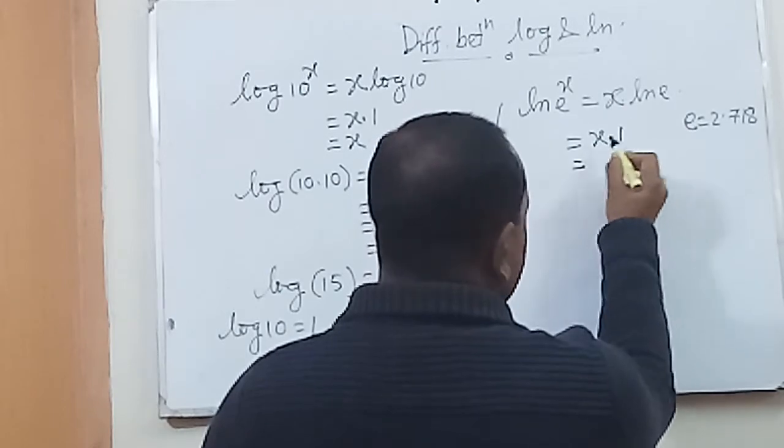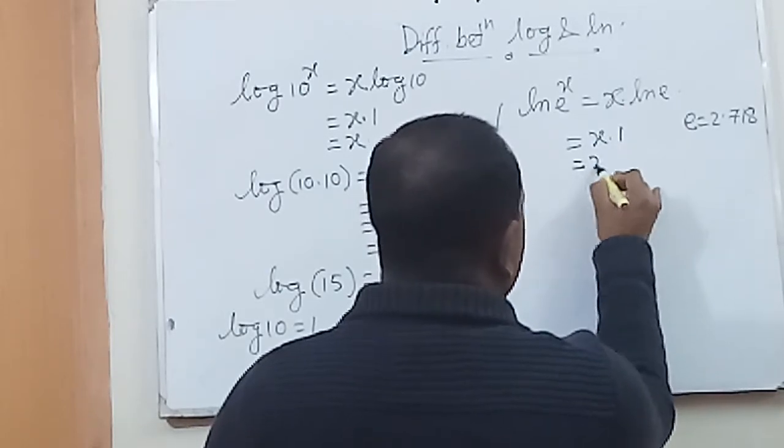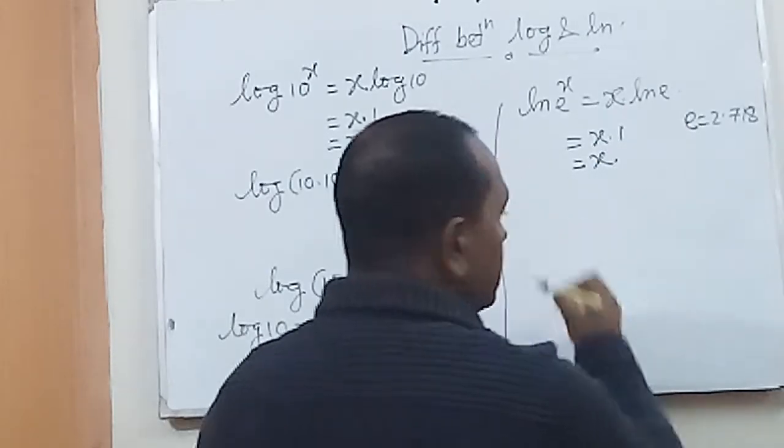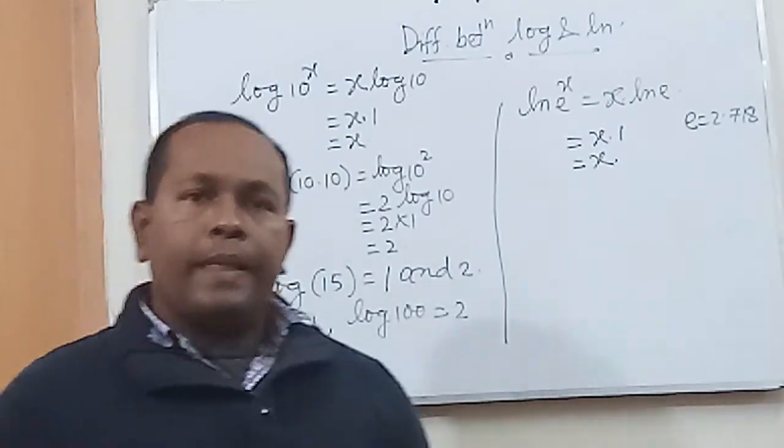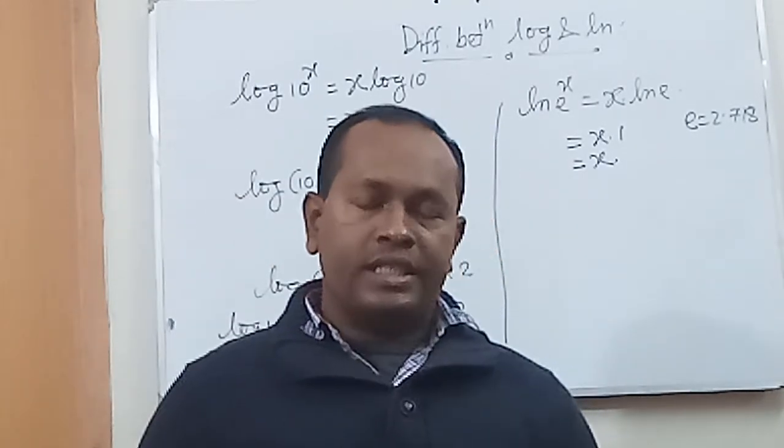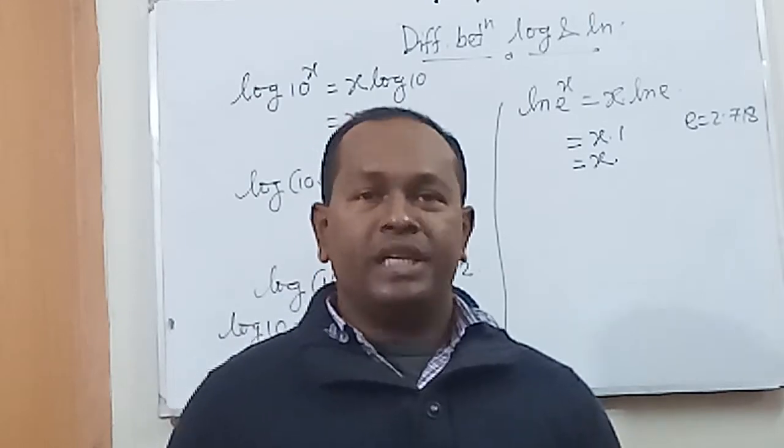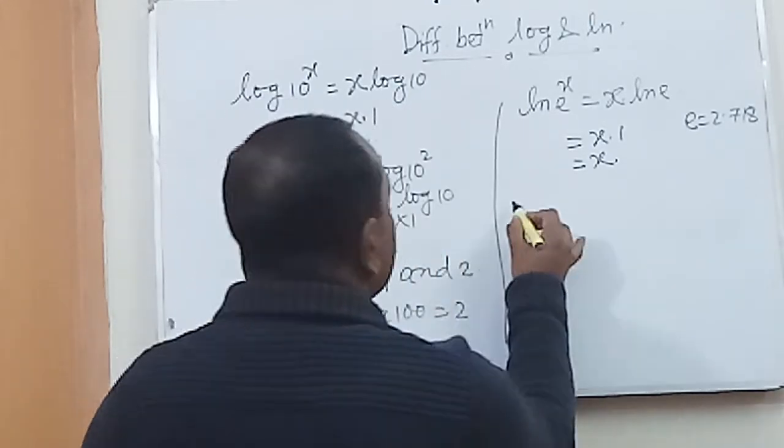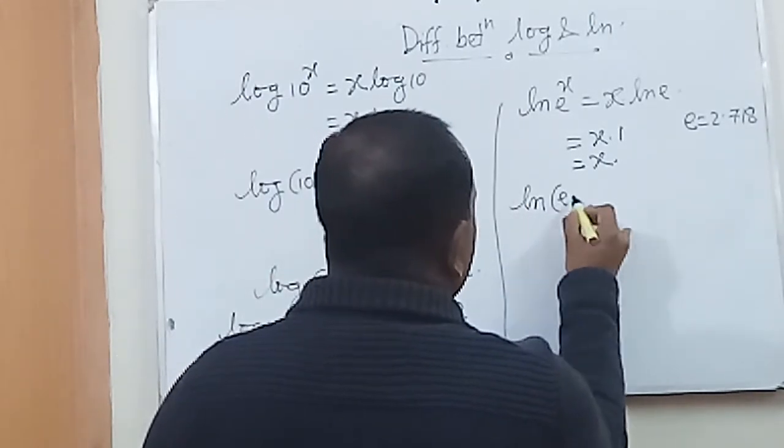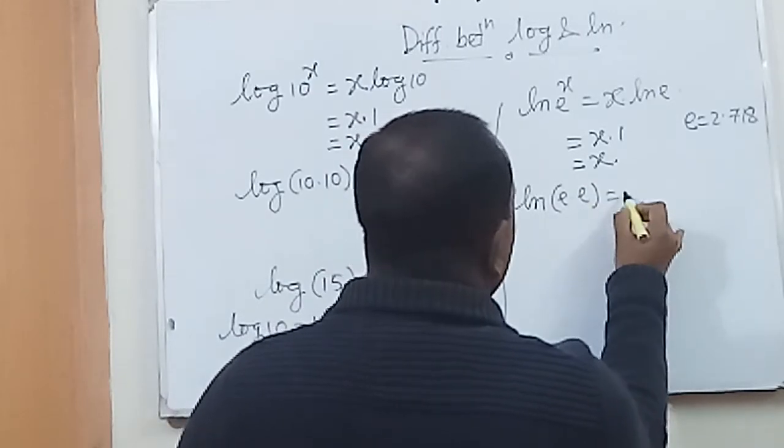So x times 1 equals x. Natural log means how many multiples of log e we have. So log e to the power 1, or e, is equals to log e.